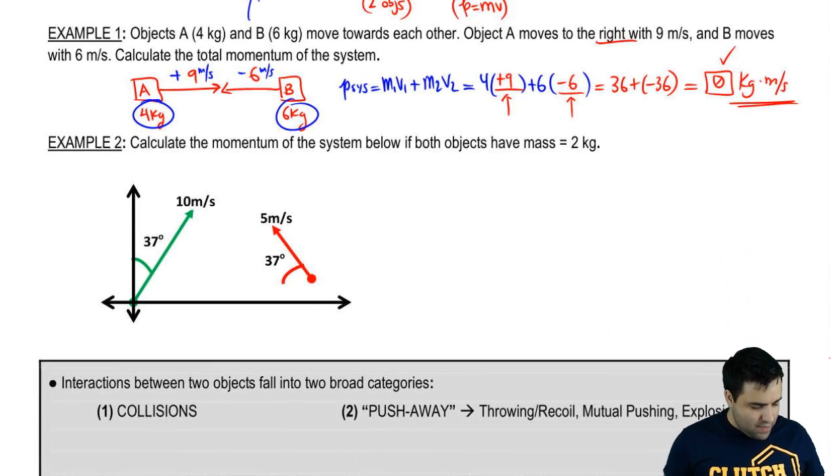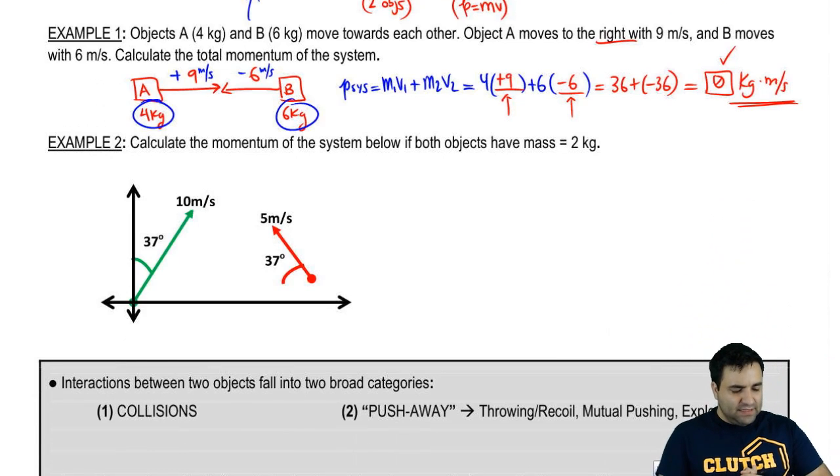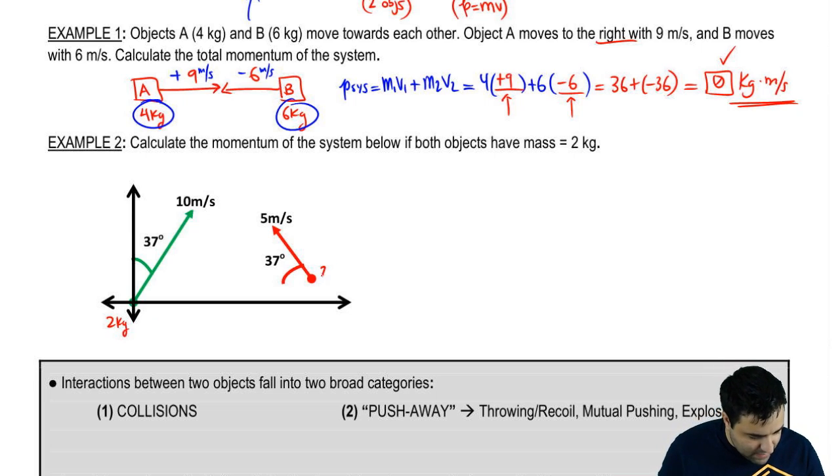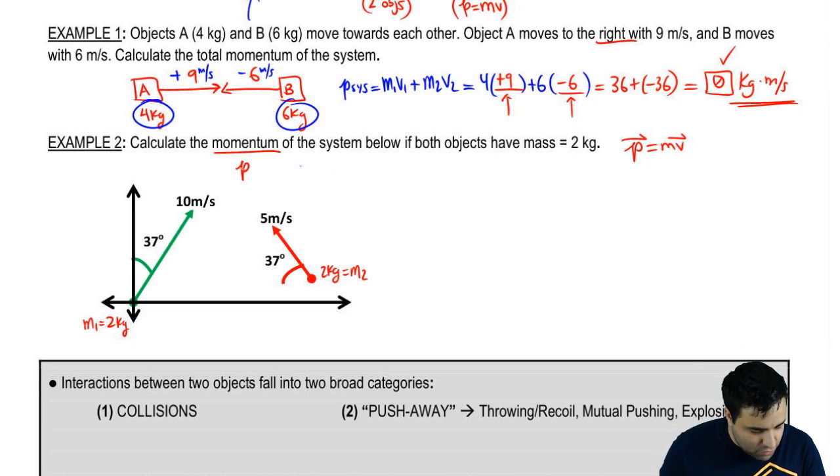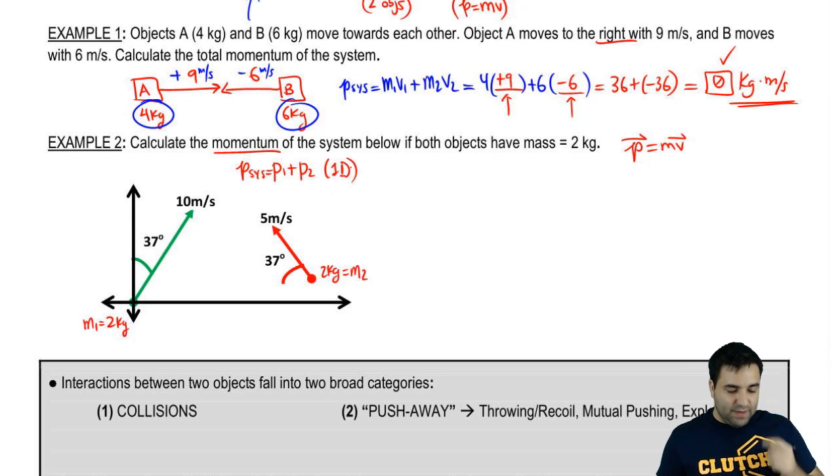Let me do another quick example here. Calculate the momentum of the system below if objects have mass two kilograms. So the objects are both two kilograms. Now I want to remind you that momentum is a vector. P is a vector because V is a vector. So when I combine the momentum of these two guys, let's call this M1, let's call this M2. When I combine the momentum of these guys and I say P total or P system is P1 plus P2, this is not enough. This only works for one dimension. But because these guys are going two dimensions, the momentum can't be simply the addition.